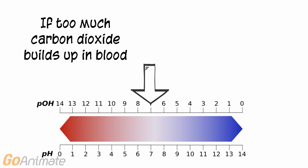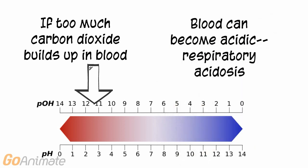More hydrogen ions are produced, causing the pH to go down. The blood can become acidic in a condition known as respiratory acidosis. You can induce a slight state of respiratory acidosis by holding your breath.